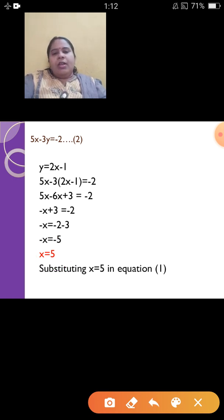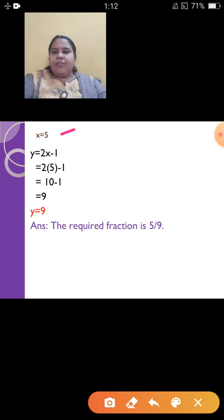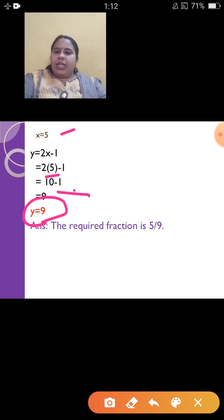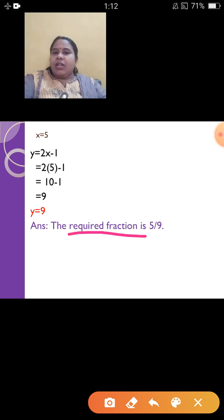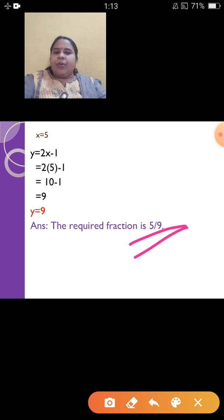Now substitute x = 5 into equation 1: y = 2x − 1 = 2 × 5 − 1 = 10 − 1 = 9. So y = 9. The question asked to find the required fraction, which is numerator upon denominator. Numerator is 5 and denominator is 9, so the required fraction is 5/9. Read the question part by part, frame the equations, and use whichever method you find easy.